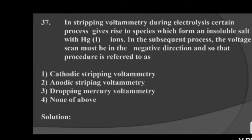Next question: in stripping voltammetry, during electrolysis certain processes give rise to species that form an insoluble part with mercury. In the subsequent process the voltage scan must be in the negative direction, and that procedure is referred to as — option 1: cathodic stripping voltammetry, option 2: anodic stripping voltammetry, option 3: dropping mercury voltammetry, option 4. The correct answer is option 1: cathodic stripping voltammetry.